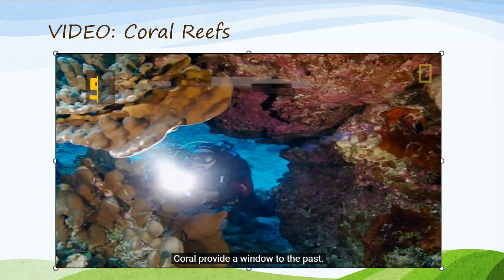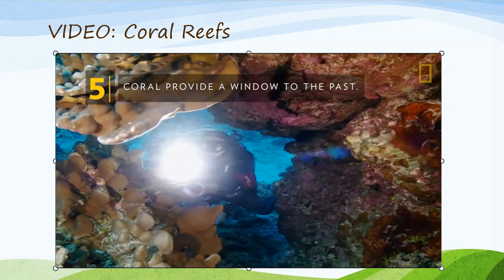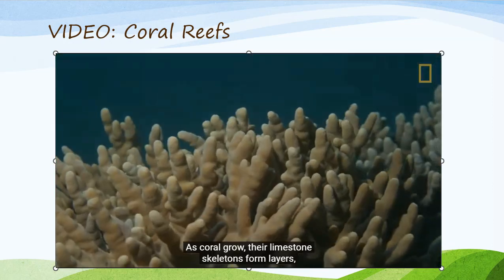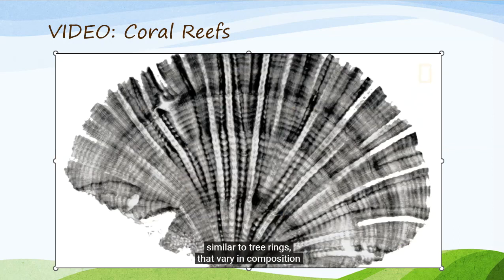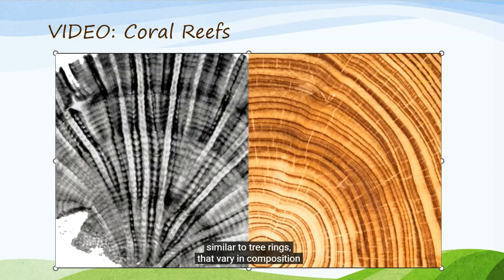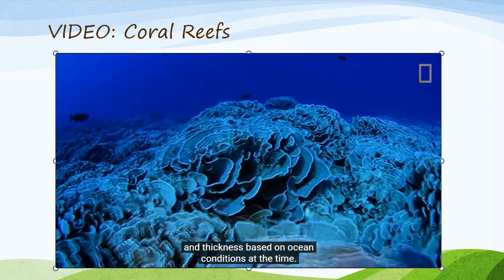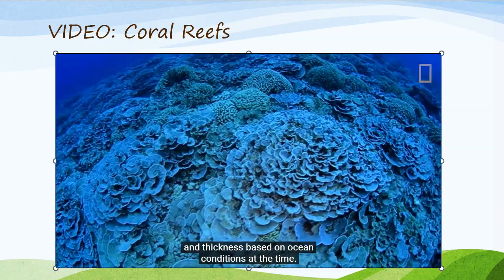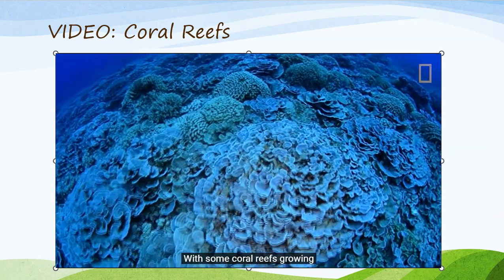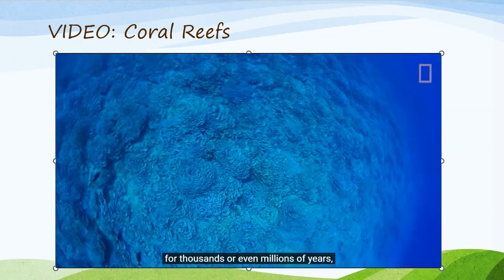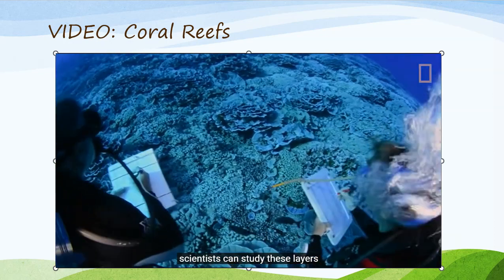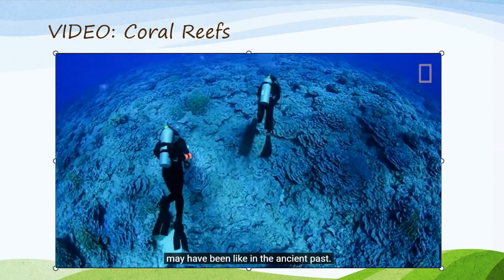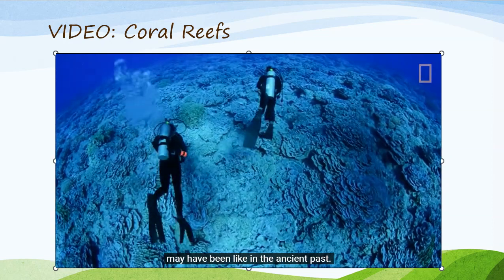Coral provide a window to the past. As coral grow, their limestone skeletons form layers similar to tree rings, that vary in composition and thickness based on ocean conditions at the time. With some coral reefs growing for thousands or even millions of years, scientists can study these layers to reveal what the Earth's climate may have been like in the ancient past.